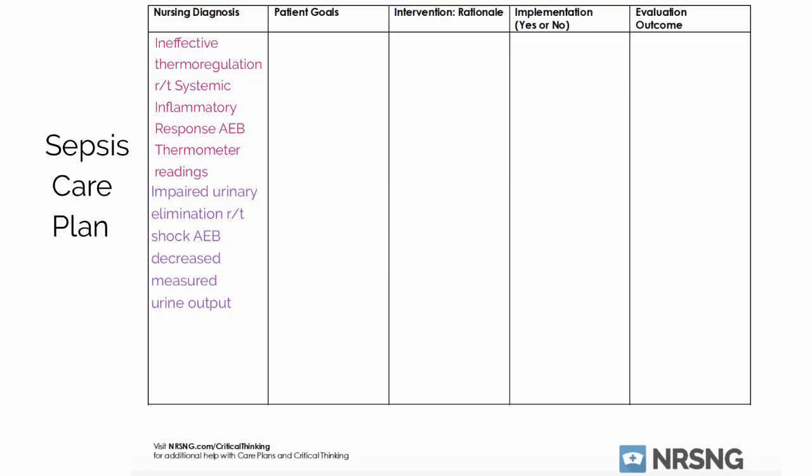For additional nursing diagnoses, I did a few risk ones. Risk for electrolyte imbalance is huge — you're going to want to watch all electrolytes, especially with a fluid imbalance. I also wrote risk for deficient fluid volume and risk for acute confusion. A lot of these patients — say they came in with a urinary tract infection that went septic — will be very confused. When vital signs are so abnormal and neurological changes occur, you will have altered mental status. And then also risk for infection, meaning secondary infections: since we're giving antibiotics, they're at risk for C. diff.